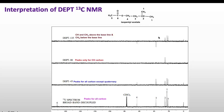Now in DEPT 135, CH₃ and CH signals appear above the baseline and CH₂ signals appear below the baseline. We can see that certain peaks are below the baseline, belonging to CH₂ — these correspond to carbon numbers three and four. The remaining peaks above the baseline belong to CH₃ and CH carbons. We already know from DEPT 90 which peak belongs to CH.